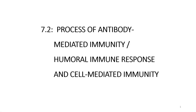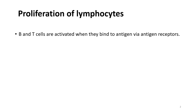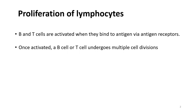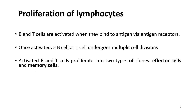We're going to learn about the process of antibody-mediated immunity or humoral immune response, followed by cell-mediated immunity, involved in our third line of defense. B and T cells are activated when they bind to antigen via antigen receptors — the B cell receptor and T cell receptor. Once activated, these cells will undergo multiple cell divisions or mitosis. The activated B and T cells will proliferate into two types of clones: effector cells and memory cells.